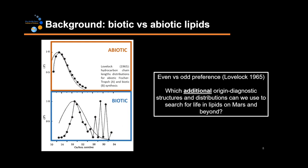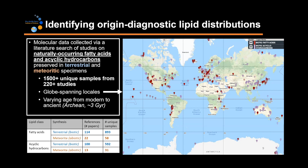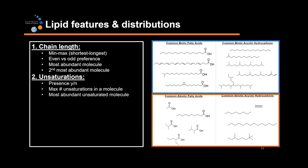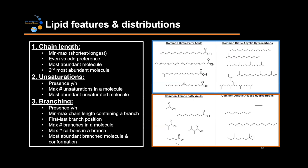Since lipids have so many different molecular structures and distributions, I started this study by asking what additional origin diagnostic structures and distributions can we use to search for life in lipids on Mars and beyond? To do this, I conducted a literature search, gathering molecular data from studies on naturally occurring fatty acids and acyclic hydrocarbons reported in terrestrial and meteoritic specimens — over 1,500 unique samples from 220-plus studies from globe-spanning locales, varying in age from modern to ancient. I gathered data pertaining to three types of molecular structures: chain length, unsaturations, and branching, and I did find origin diagnostic or potentially origin diagnostic distributions for all of these parameters.